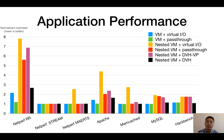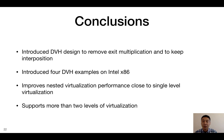In summary, we introduced Direct Virtual Hardware, or DVH, that handles an exit from a nested VM without the guest hypervisor's intervention, and therefore removes exit multiplication. At the same time, DVH also retains hypervisor interposition and its benefits, such as migration. We designed and implemented four DVH mechanisms on Intel x86 architecture using the KVM hypervisor. With them, we showed that nested virtualization performs close to single-level virtualization. Lastly, DVH supports more than two levels of virtualization and also provides performance close to single-level virtualization. Details are in the paper.